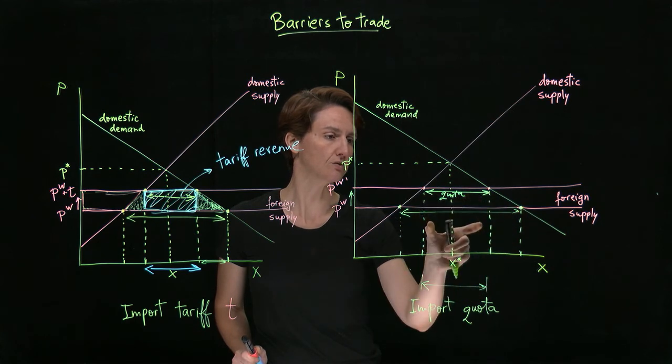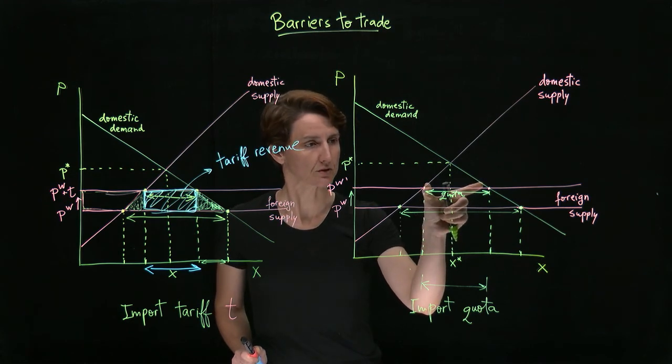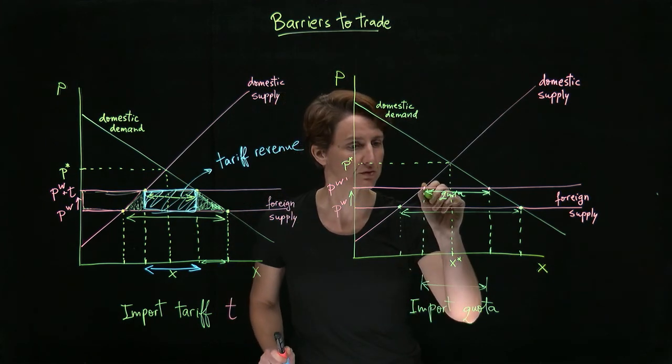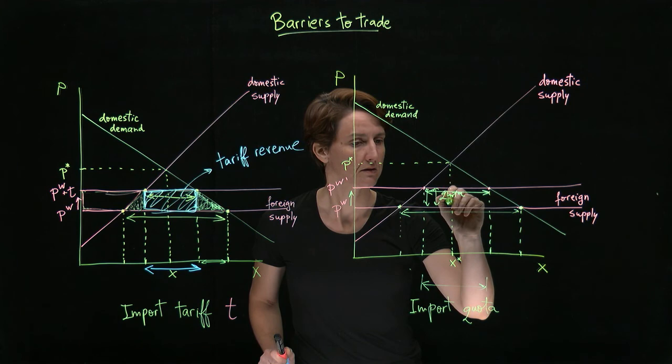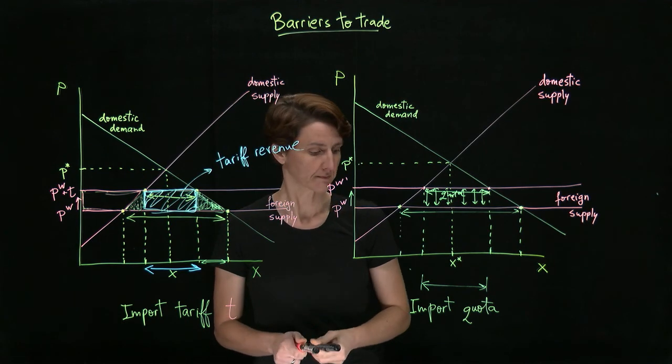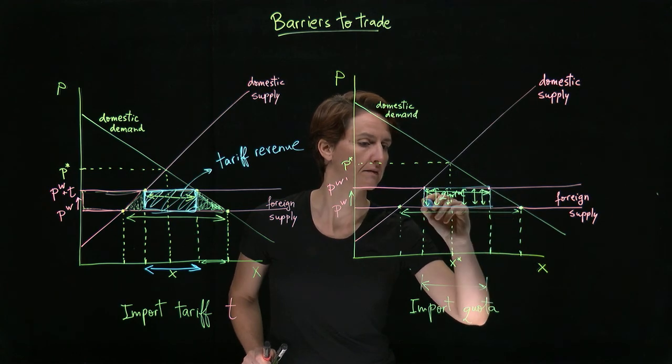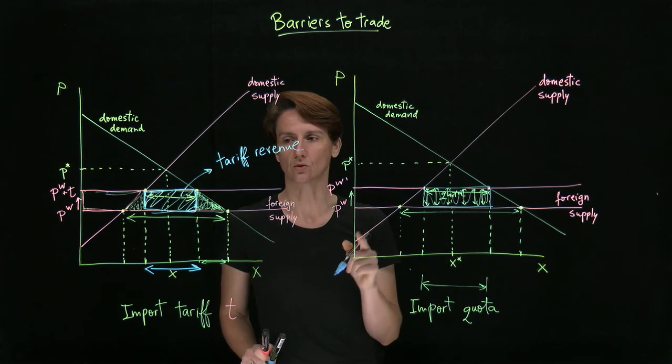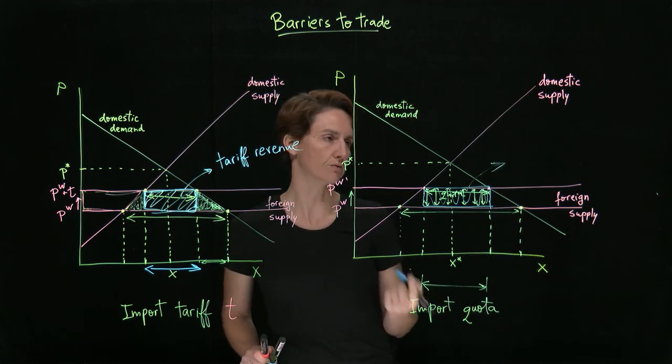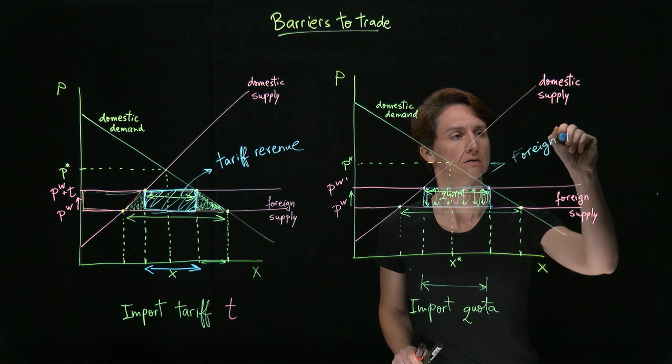Instead, for each of these units that is still brought into the country, the fact that the price at which they're sold is greater than the world price means that for each one of those units there's a net gain to the foreign producers. So this area will now go, rather than to tariff revenue, will form producer surplus for foreign suppliers.